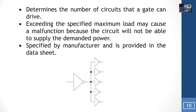Fan out determines the number of circuits that the gate can drive. The fan out is also specified by the manufacturer and provided in the data sheet. Exceeding the specified maximum load may cause a malfunction because the circuit will not be able to supply the demanded power. In the figure, a NAND gate is connected to 5 NAND gates, so its fan out is 5.